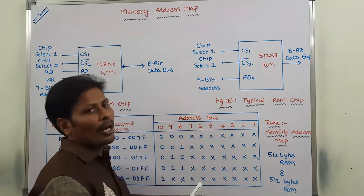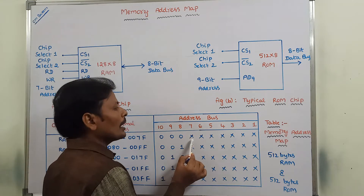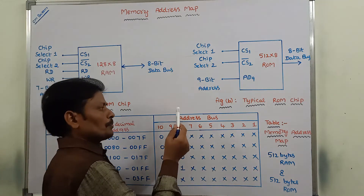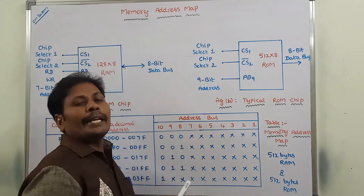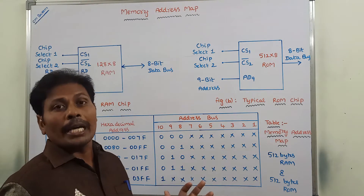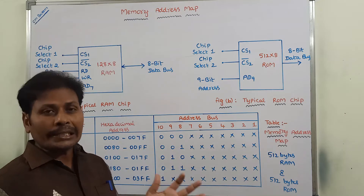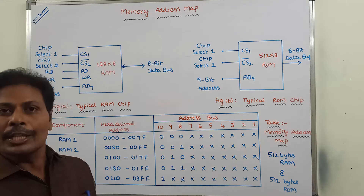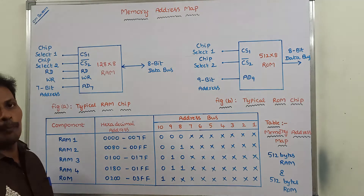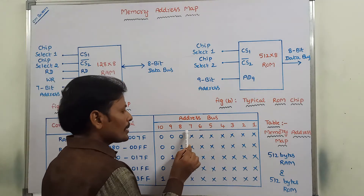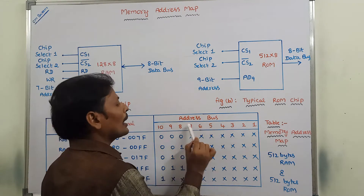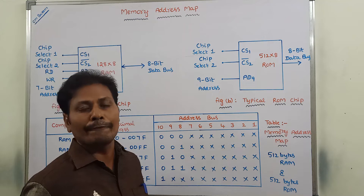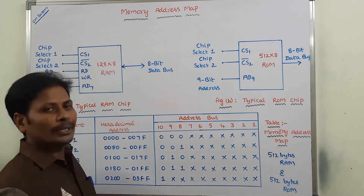A small cross mark under the address bus lines indicates that the first 7 lower-order address lines are connected to the address inputs of each and every chip in the computer system.